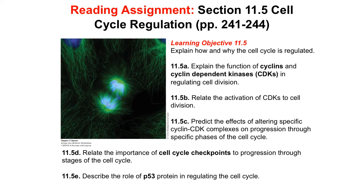Your reading assignment for section 11.5 is found on pages 241 through 244 of your textbook. The major learning objective of 11.5 is to be able to explain how and why the cell cycle is regulated. The sub-objectives are: first, explain the function of cyclins and cyclin-dependent kinases, or CDKs, in regulating cell division; second, relate the activation of CDKs to cell division; third, predict the effects of altering specific cyclin-CDK complexes on progression through specific phases of the cell cycle.